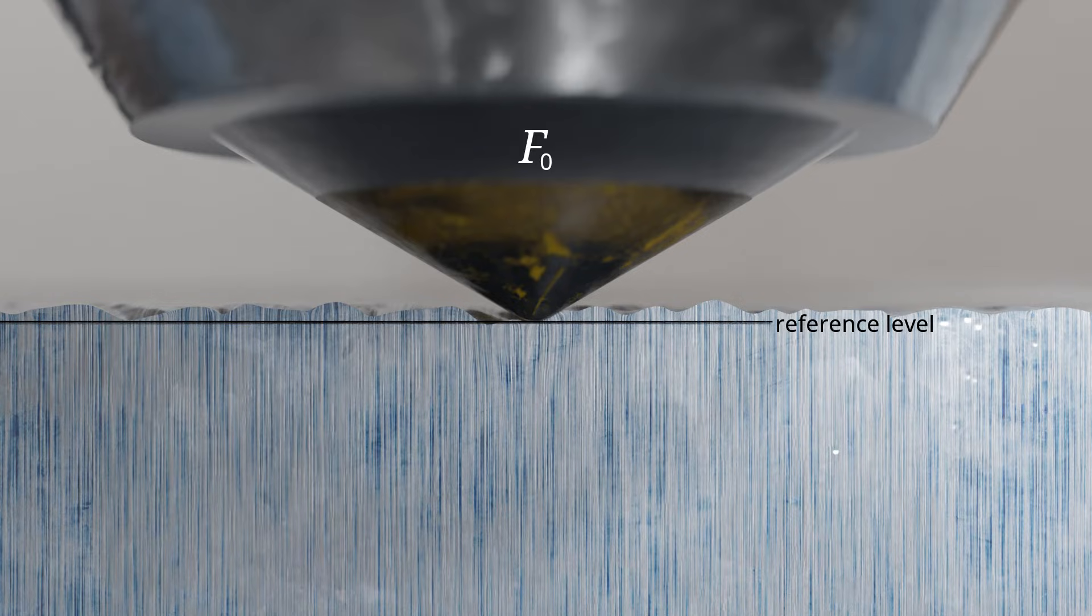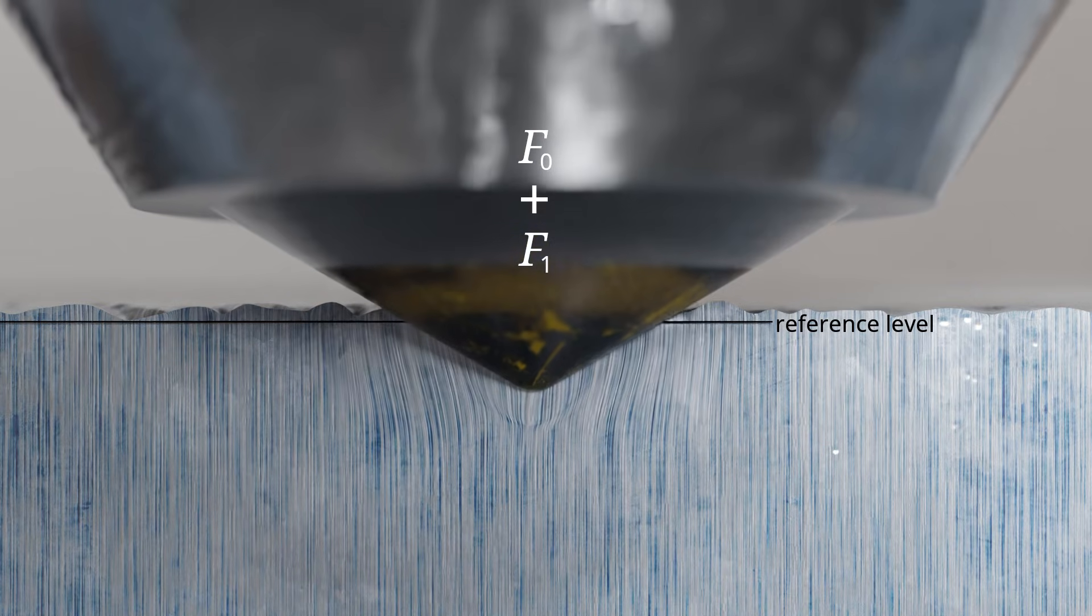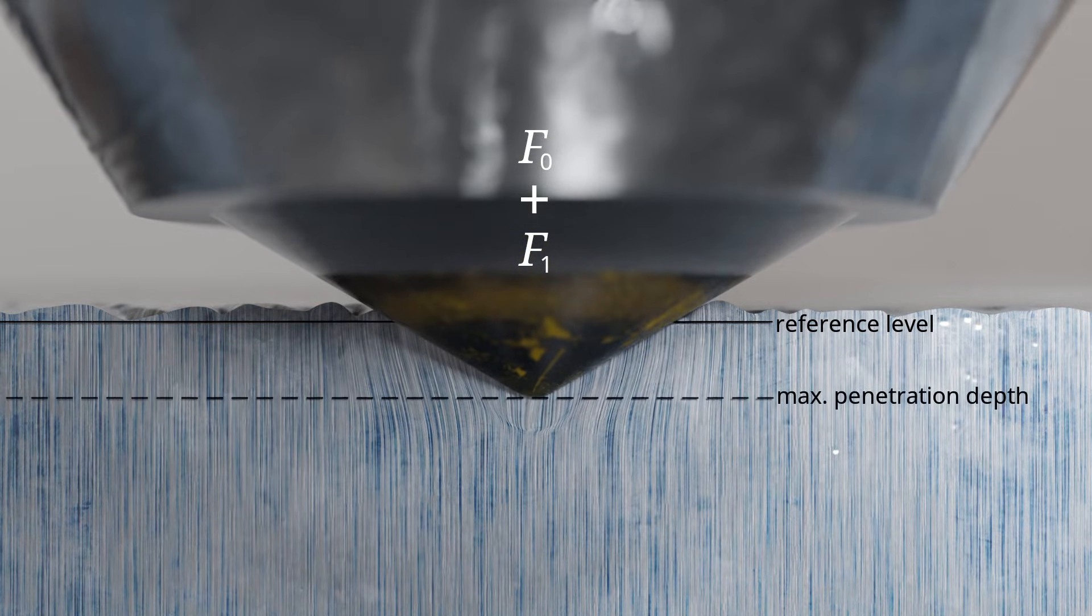Next, in addition to the preload, the actual test load F1 is applied. The indenter penetrates the material surface with a total force F, which is the sum of F0 and F1. The appropriate test force F1 is determined from reference tables based on the type of indenter used and the material being tested.